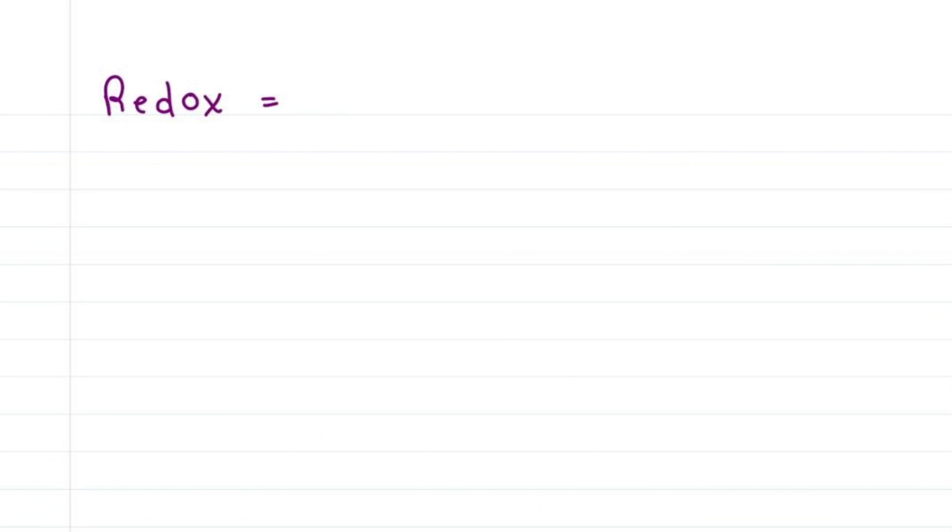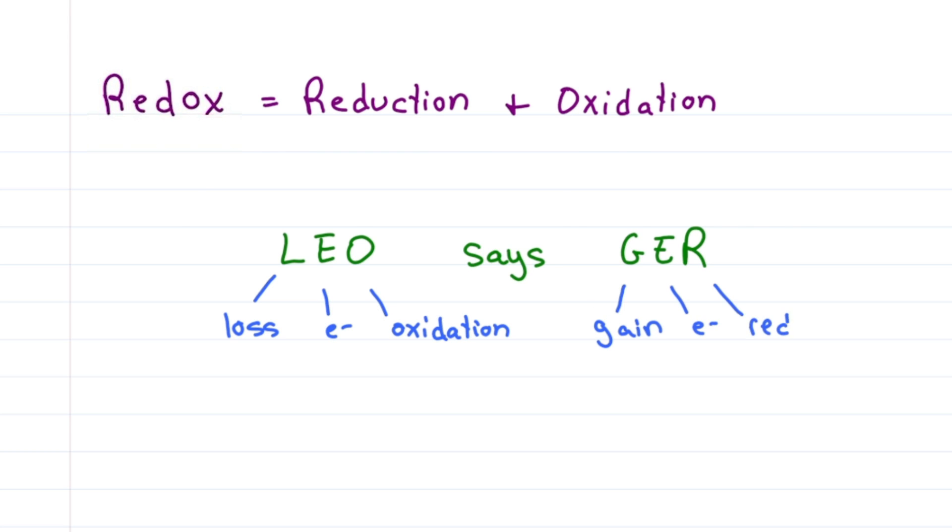Remember that in redox, reduction and oxidation happen as a pair. Think Leo the lion says grrrr to remind you that loss of electrons is oxidation and gain of electrons is reduction.